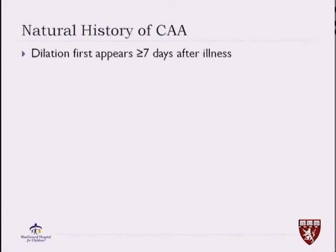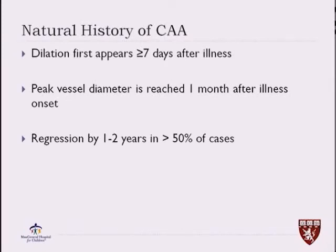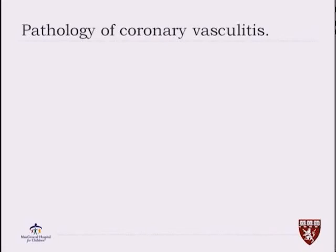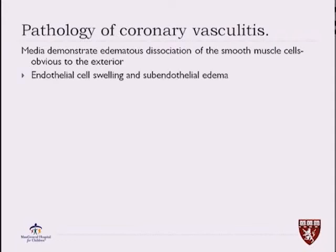The natural history of coronary artery aneurysms: the dilation starts appearing at or above day seven of the illness. The peak vessel diameter is reached at one month after illness onset, and in more than 50% of cases they regress within one to two years.